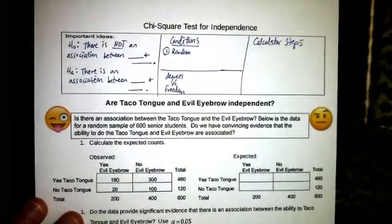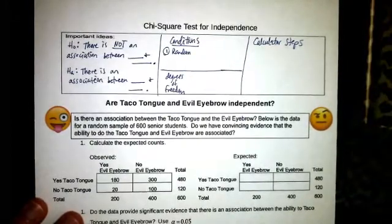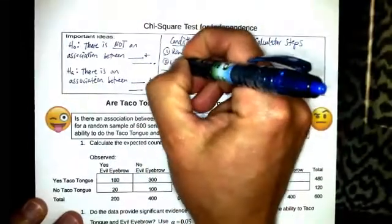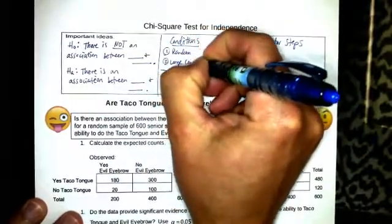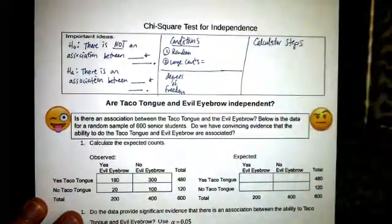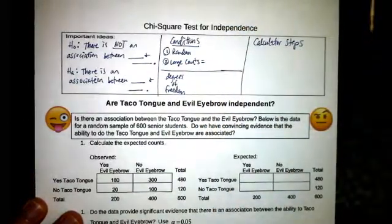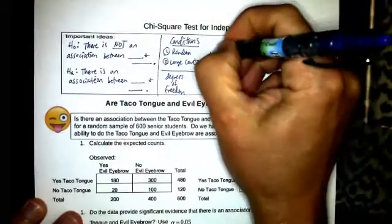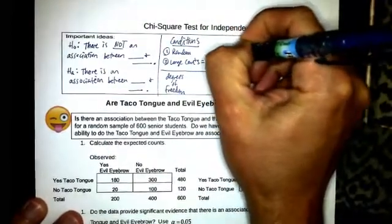In your project you need to figure out a way to randomize how you're collecting your data. And then second are large counts, so all of our expected values, all expected values.